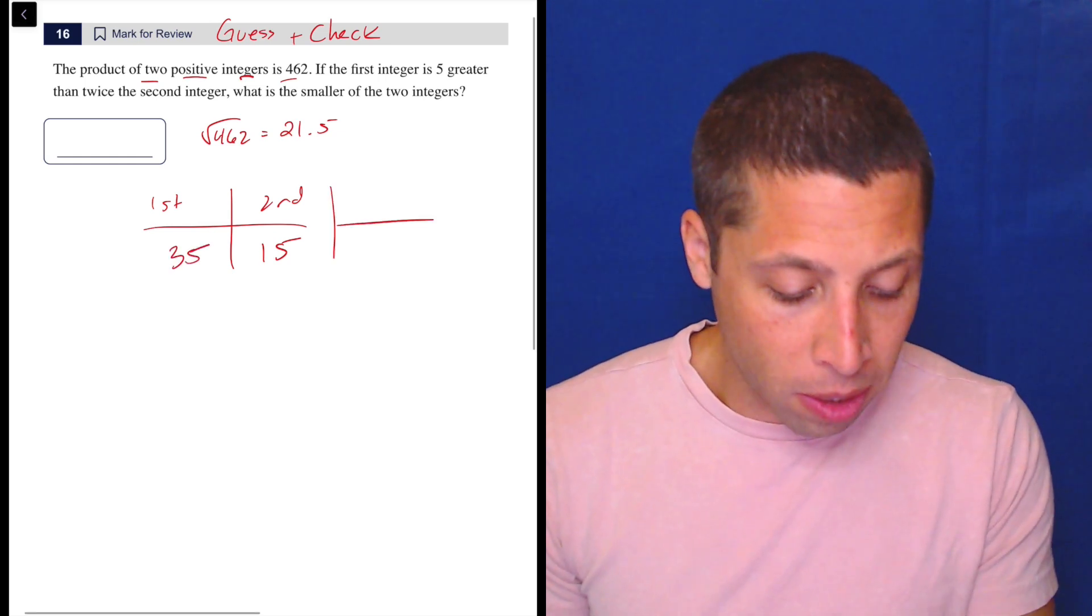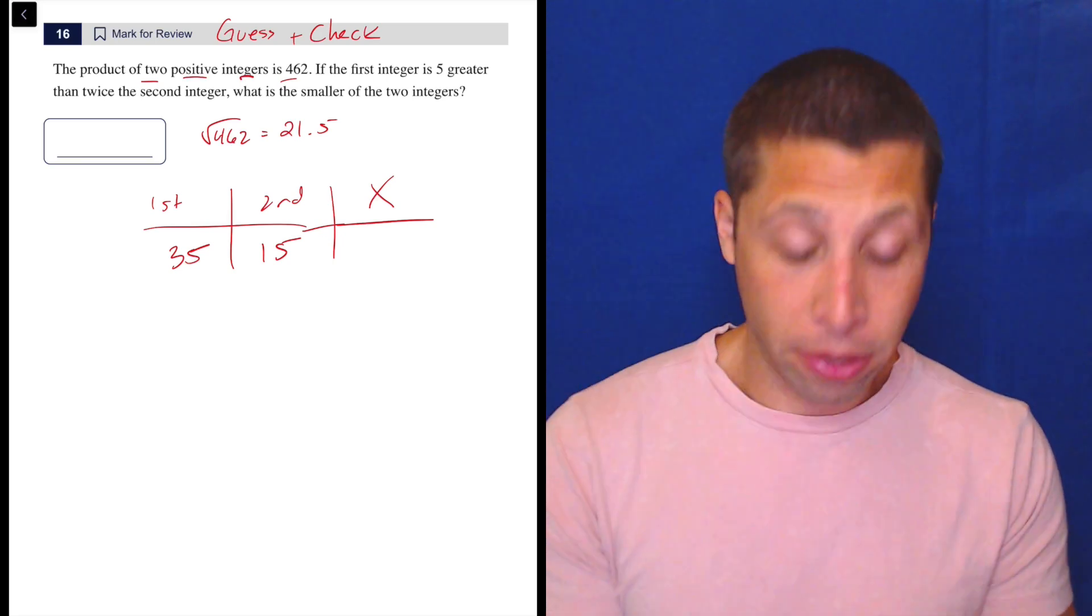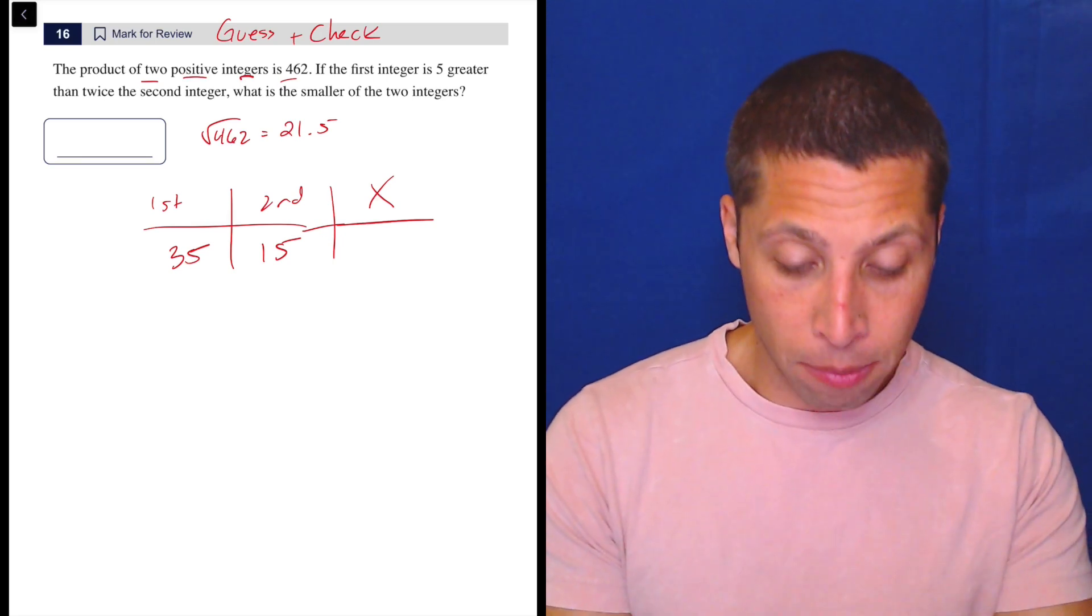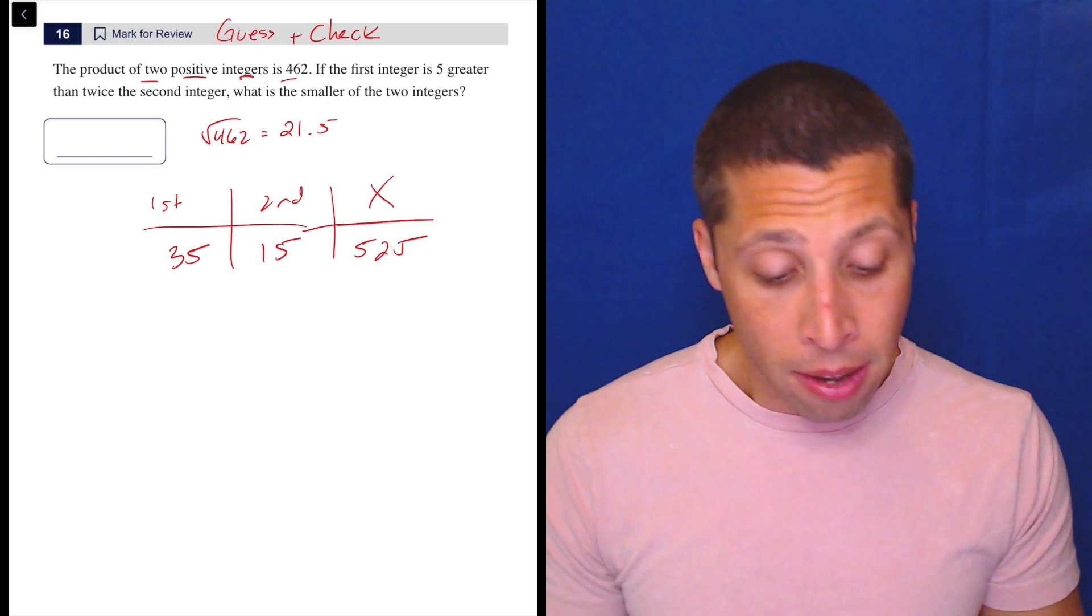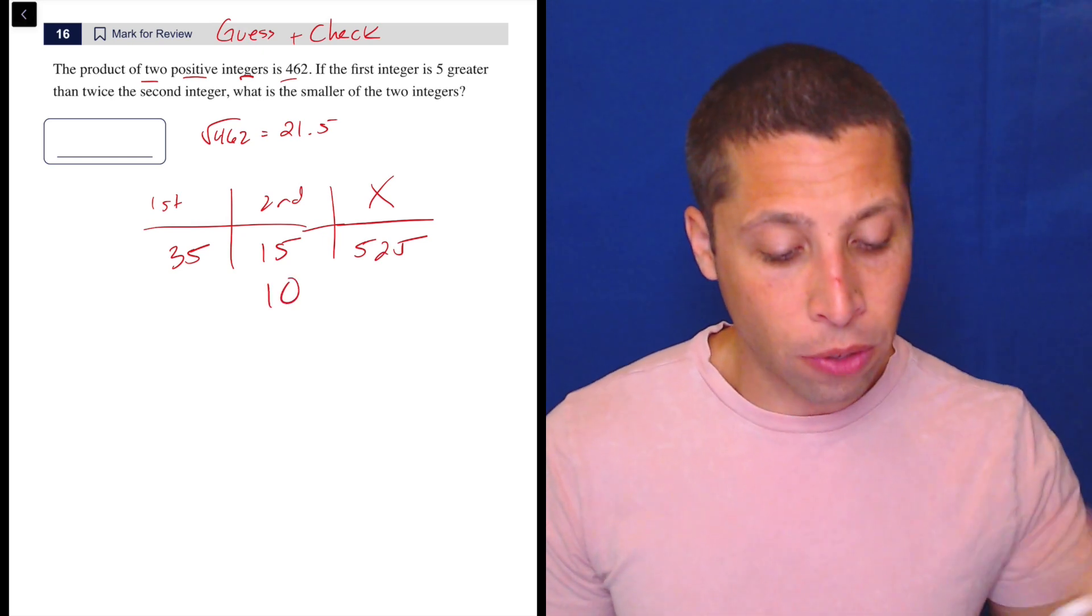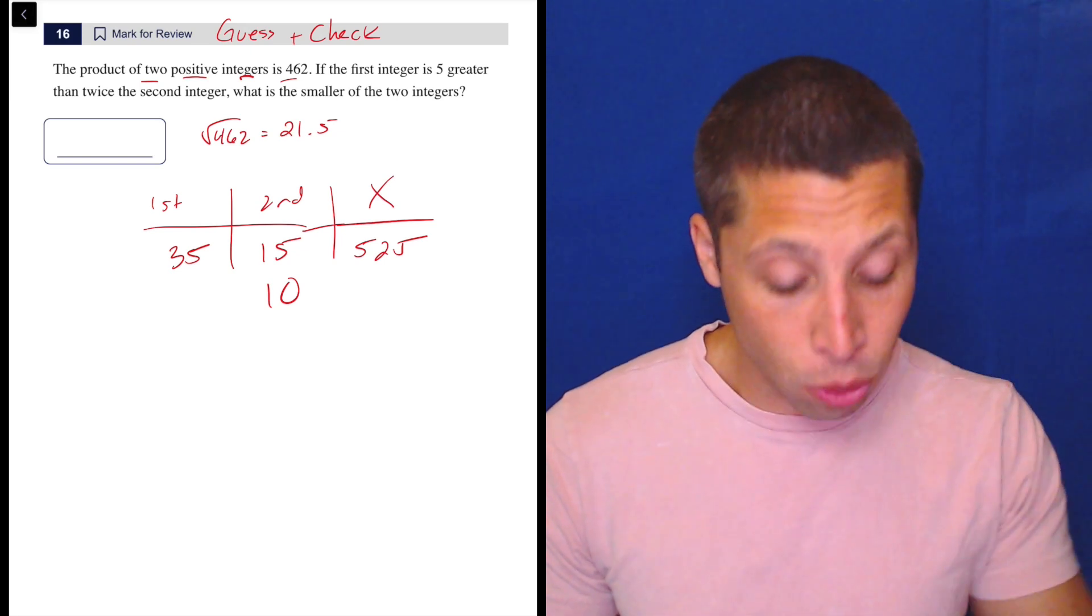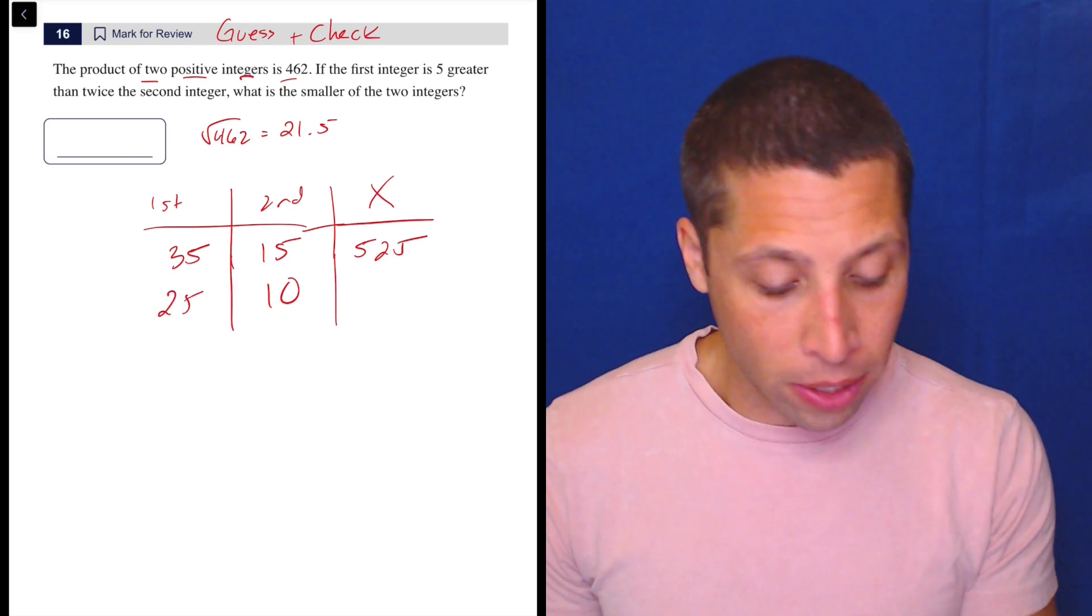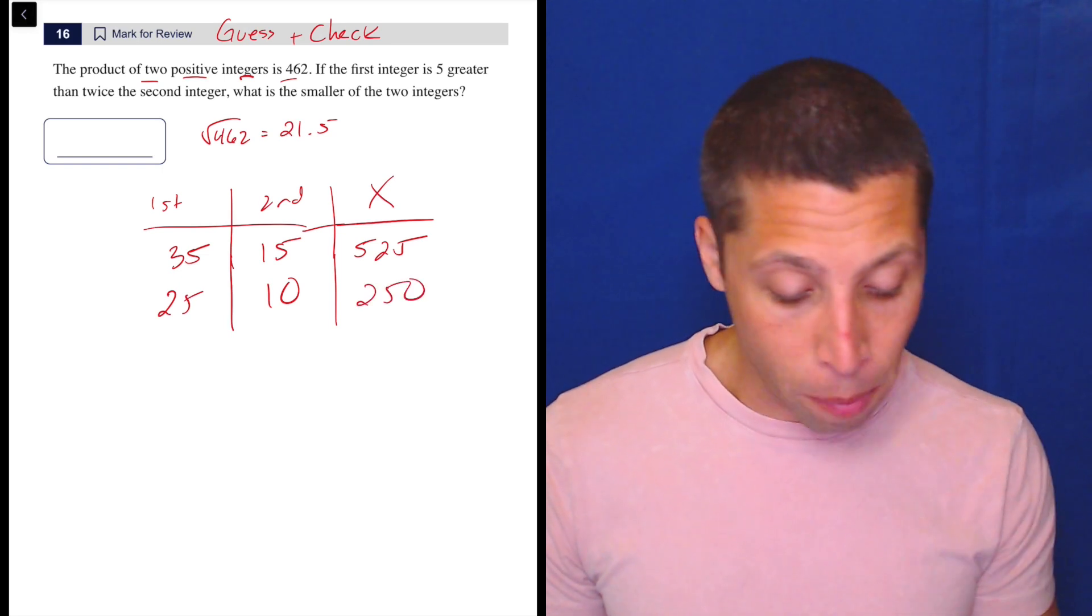So now I'm just looking, what's the product of those things? The product, the multiplication: 35 times 15 is 525. So that's kind of high. So maybe let's lower it. Let's maybe go down to 10 for a sec. So the first integer is five greater than twice the second. Twice 10 is 20, 25. What does that give me? That one, I don't even need to do my calculator. That's 250. So I'm way too low. So let's go back up.